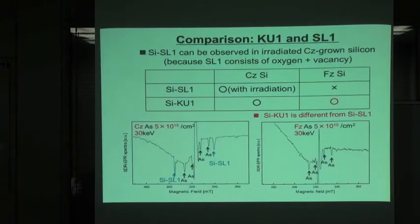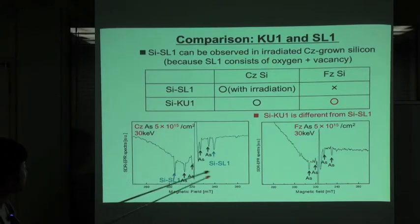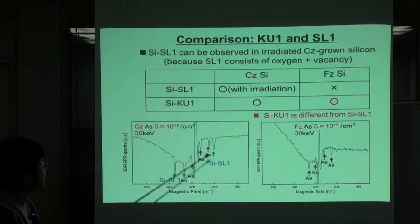This table shows the comparison of SI-KU1 and SL1. Usually, SI-SL1 can be observed in irradiated Czochralski-grown silicon, because SL1 consists of oxygen and vacancy. Like this figure, SL1 can be observed only in the Czochralski silicon.